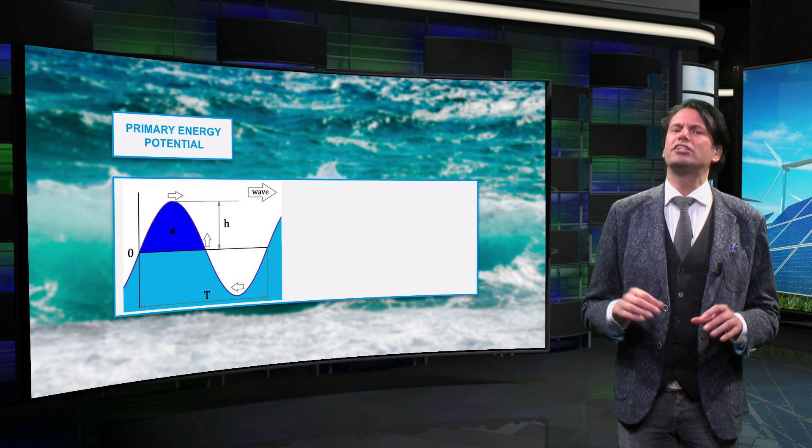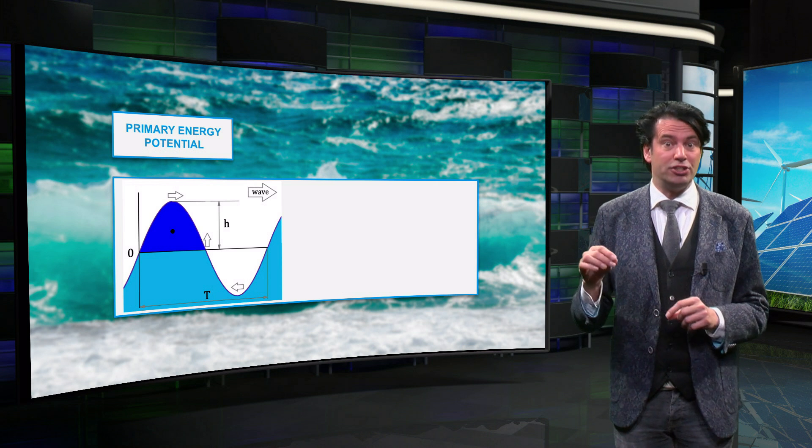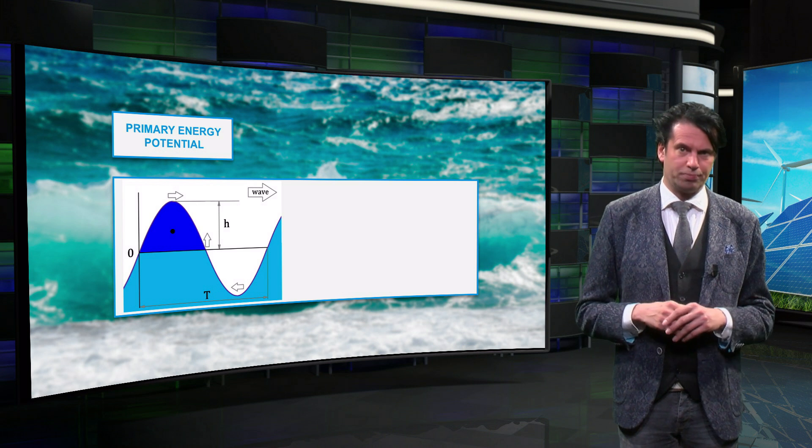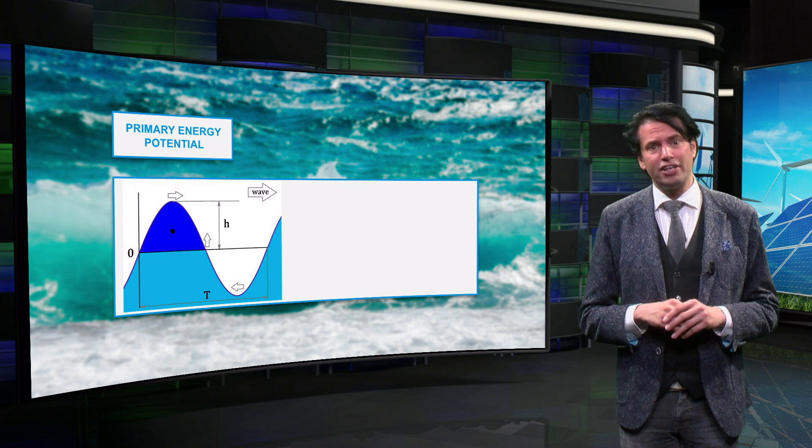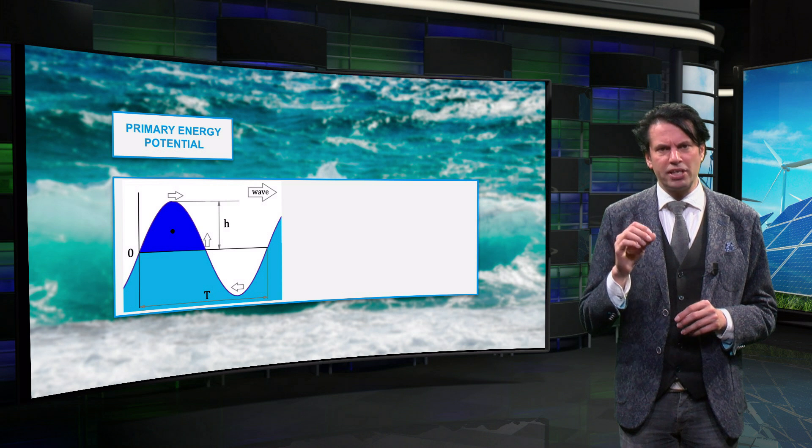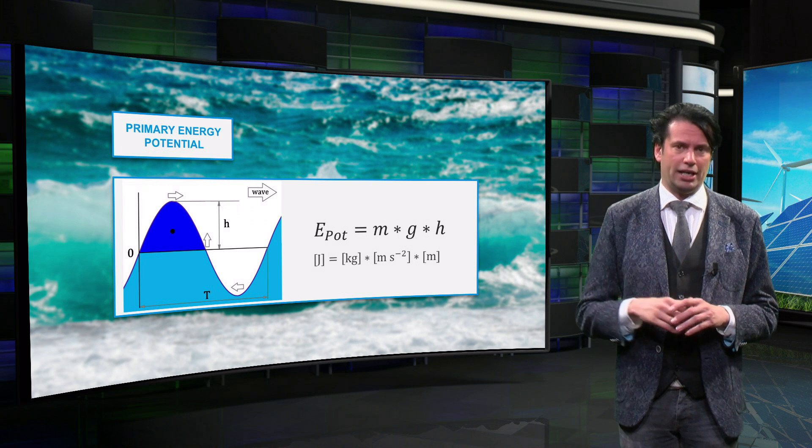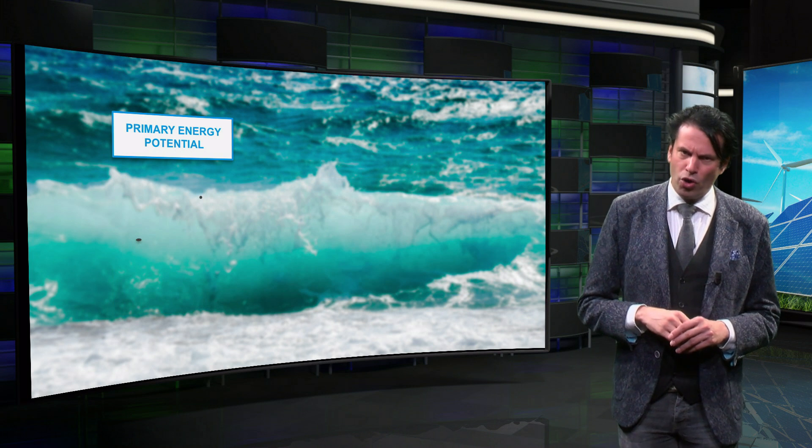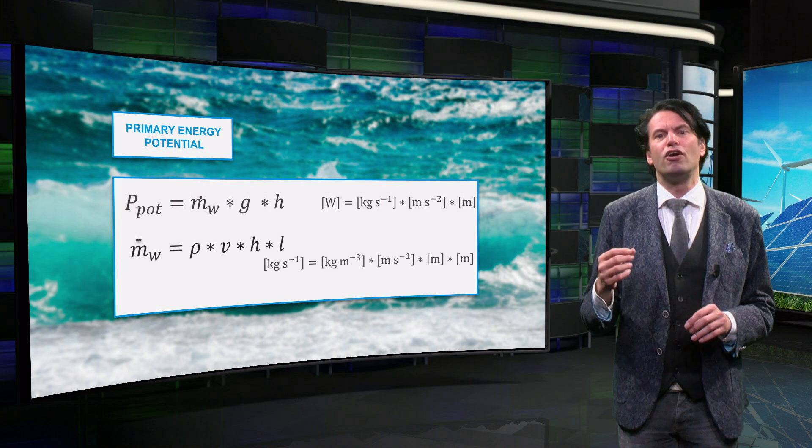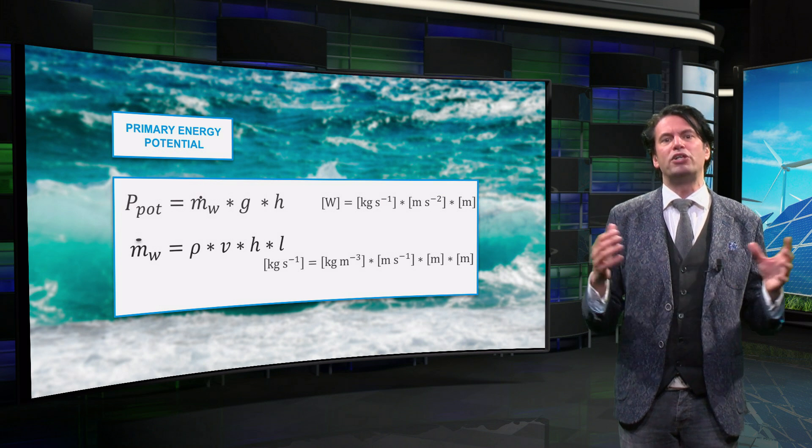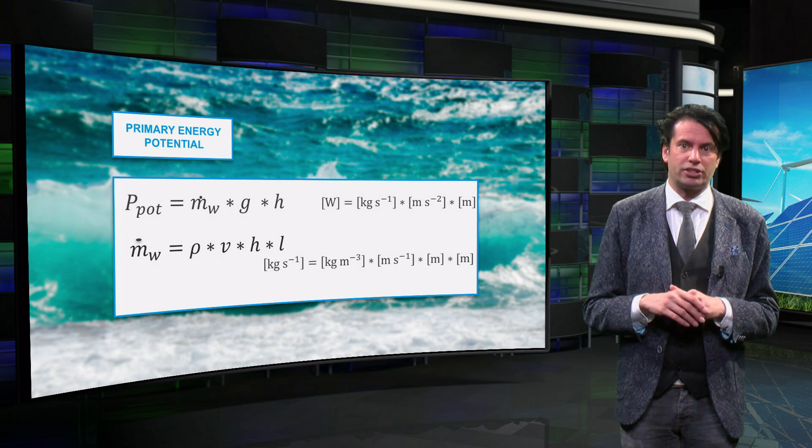The effective mass of the wave is equal to the product of the volume of the upper part of the wave indicated by the dark blue area and the density of the ocean water. This water mass will fall down over height h and therefore produce energy. This is represented by the familiar equation of the potential energy: energy is mass times gravity constant times height. If we take the mass flow instead of the mass, we can obtain the primary power potential. The mass flow is a function of the water density, the horizontal speed of the wave, the height h, and the length of the wave perpendicular to its direction l.